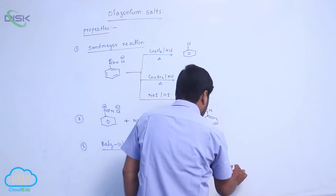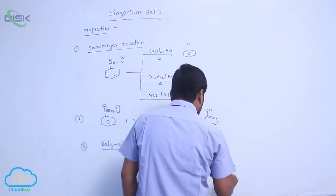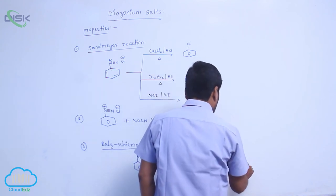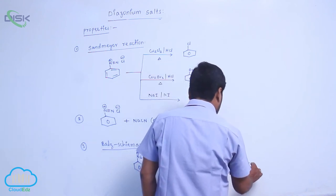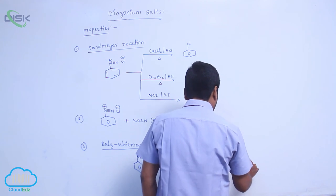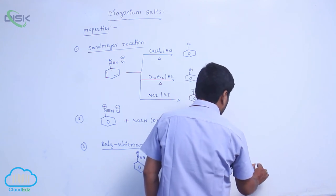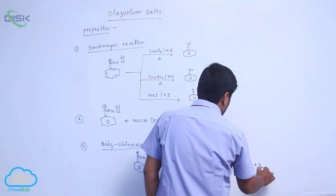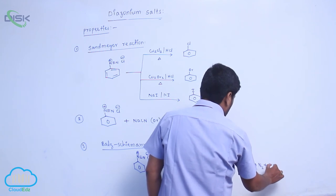This is on heating, loss of BF3 and N2 molecule to form fluorobenzene, N2 molecule and BF3.